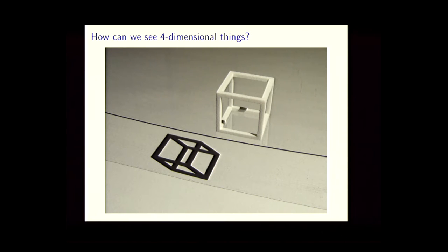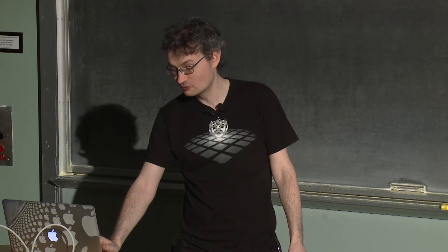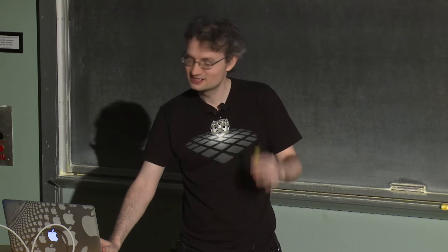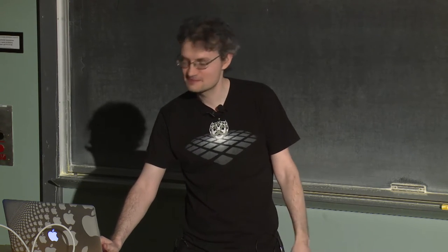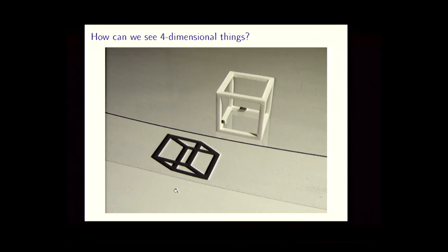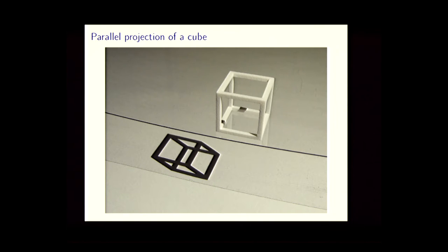Here I've got a cube projecting from three dimensions down to two dimensions. The cube is sitting above a sheet of transparent plastic, the light is up in the corner, and it's projecting a shadow. The idea is that you have a two-dimensional friend living on the table who can't see up above it, but can sense this shadow. This is an example of parallel projection — the light rays coming toward the cube are parallel to each other.